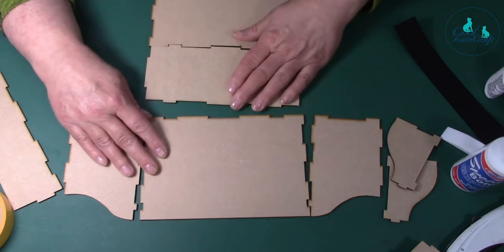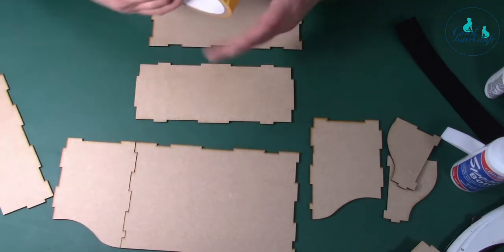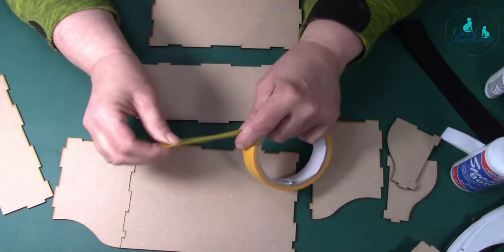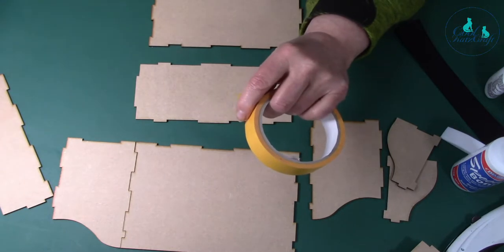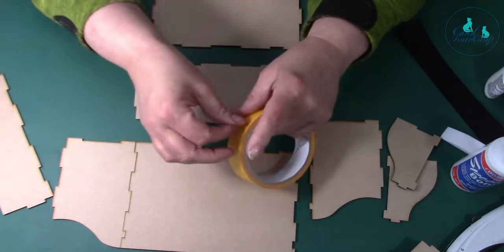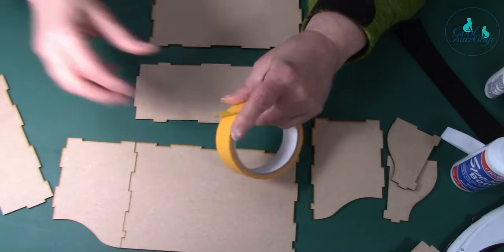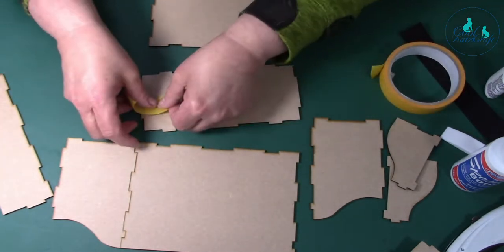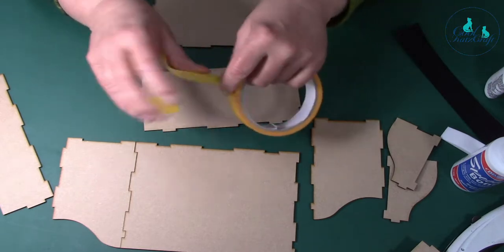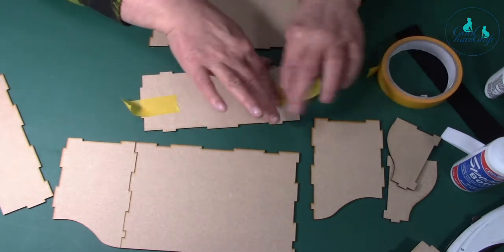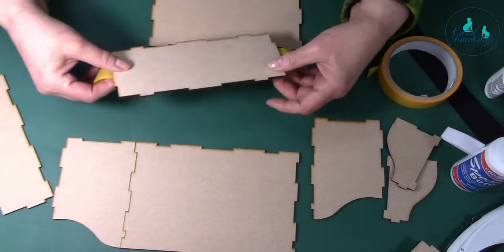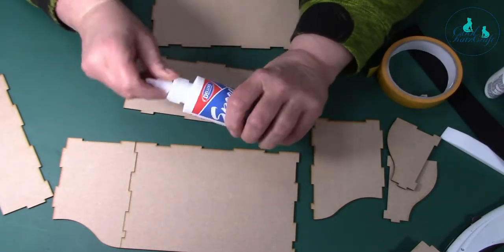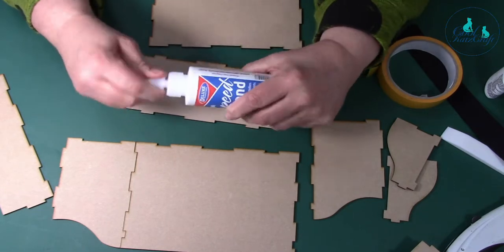What we might find useful is using our orange tiger tape. This just keeps everything in place while the glue sets. I'll tear a few strips off and get those ready. I tend to put them on the bottom of my piece.